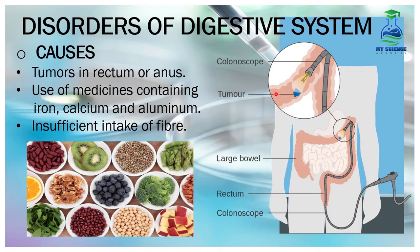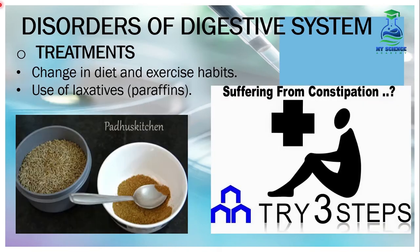Further causes of constipation: Number 1, tumors in the rectum and anus — formation of tumors in the rectum or anus causes constipation. Number 2, use of medicines containing iron, calcium, and aluminium in excess. Number 3, insufficient intake of fiber — if the diet does not contain a sufficient quantity of fiber, this also causes constipation.